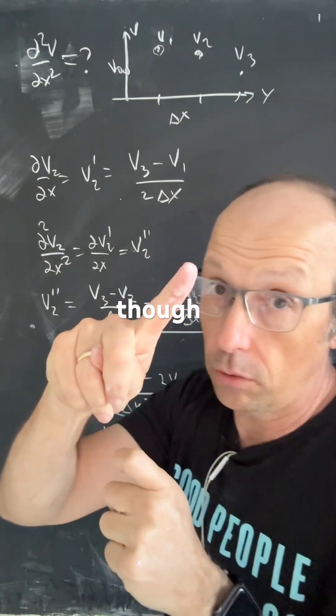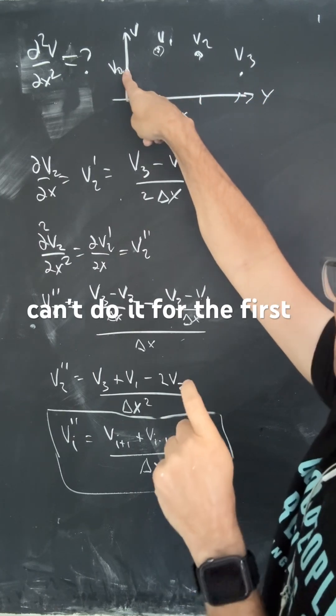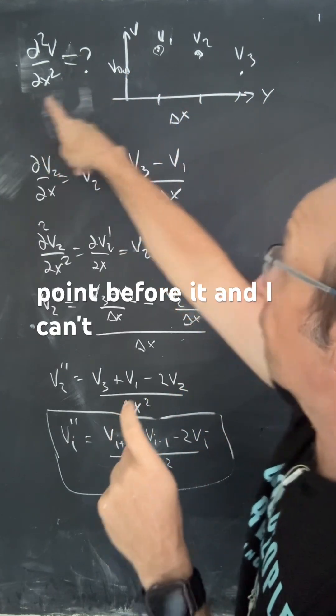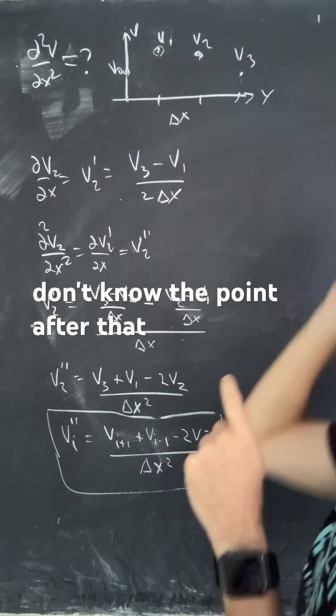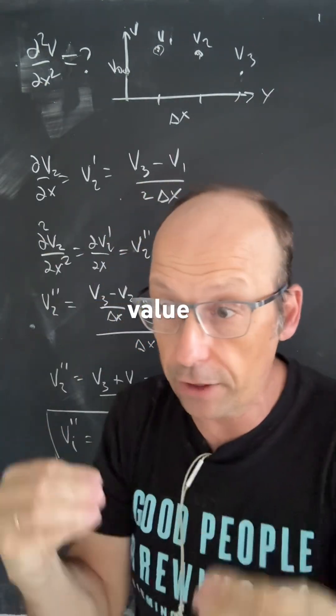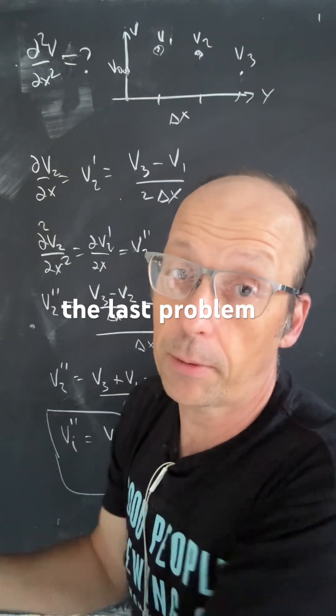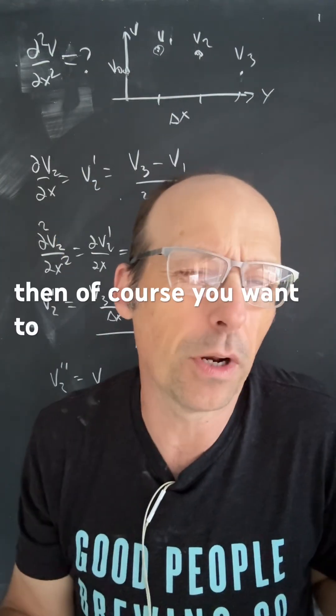Now, notice, though, that this second derivative, I can't do it for all these points. I can't do it for the first point, because I don't know the point before it, and I can't do the last point, because I don't know the point after that. But that's fine, because usually we use this in a boundary value problem, where we set the first value and we set the last problem. And then, of course, you want to do it with the computer.